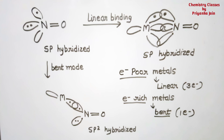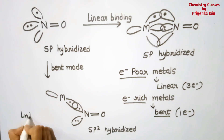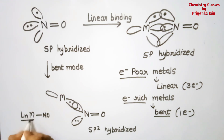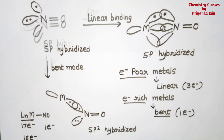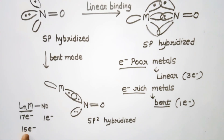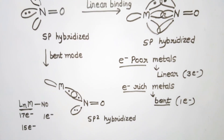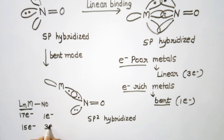In other terms, whenever the LₙM fragment binding to NO has 17 electrons, it needs 1 electron to complete 18, so NO will act as a 1-electron donor. Whenever the fragment has 15 electrons, it needs 3 electrons to complete 18, so NO will act as a 3-electron donor.